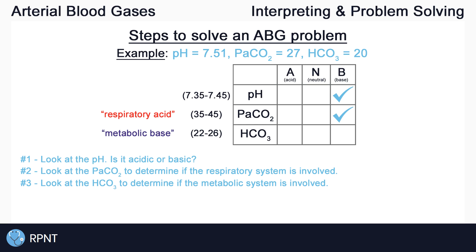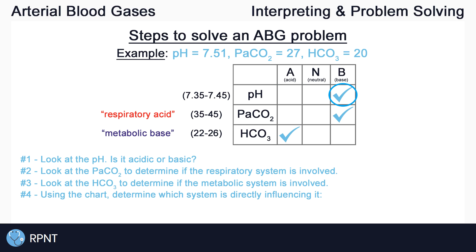Next, we do the same with HCO3 to determine if the metabolic system or the kidneys are involved. Our HCO3 here is 20, which is below the normal range of 22 to 26. The lower the HCO3, the more acidic the blood becomes, so we can check off HCO3 as being acidic. Now that we have our chart filled out, the next step is to look at the pH and determine which system is directly influencing it. Our pH is basic, so we want to know if PaCO2 or HCO3 is basic. Using the chart, it's easy to see that PaCO2 is also basic, which tells us that the respiratory system is the cause of the basic pH. So the problem is respiratory alkalosis.